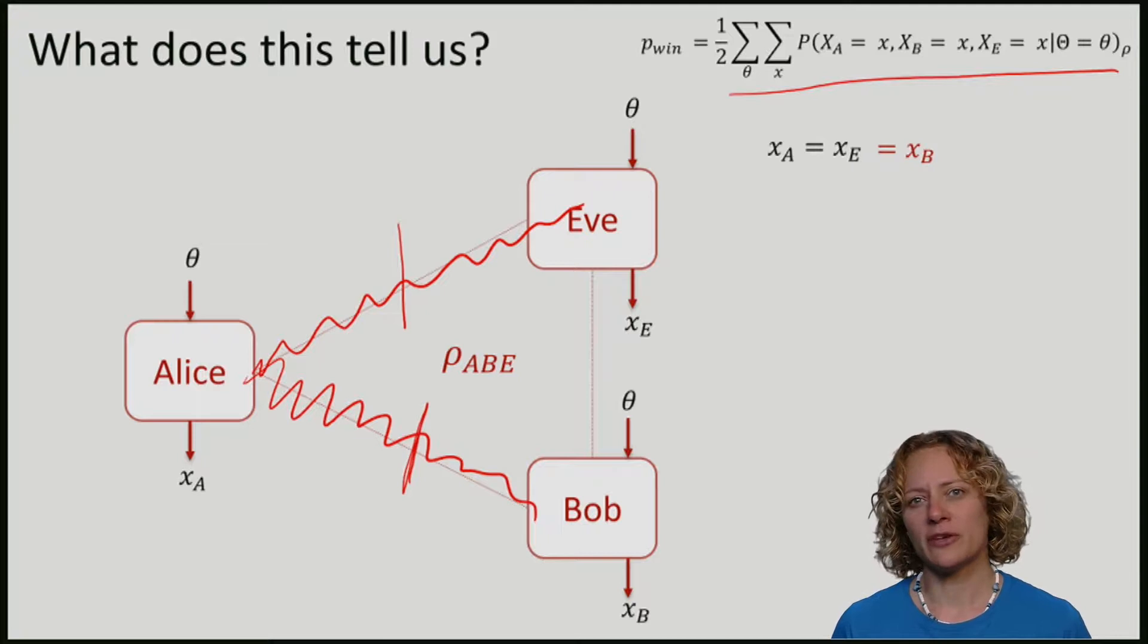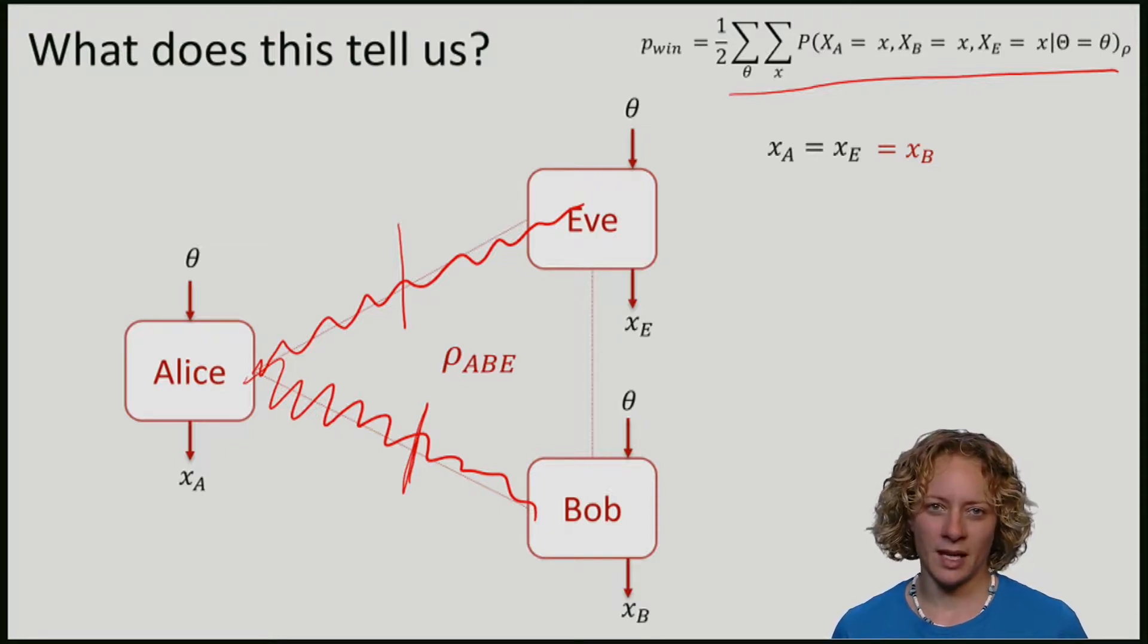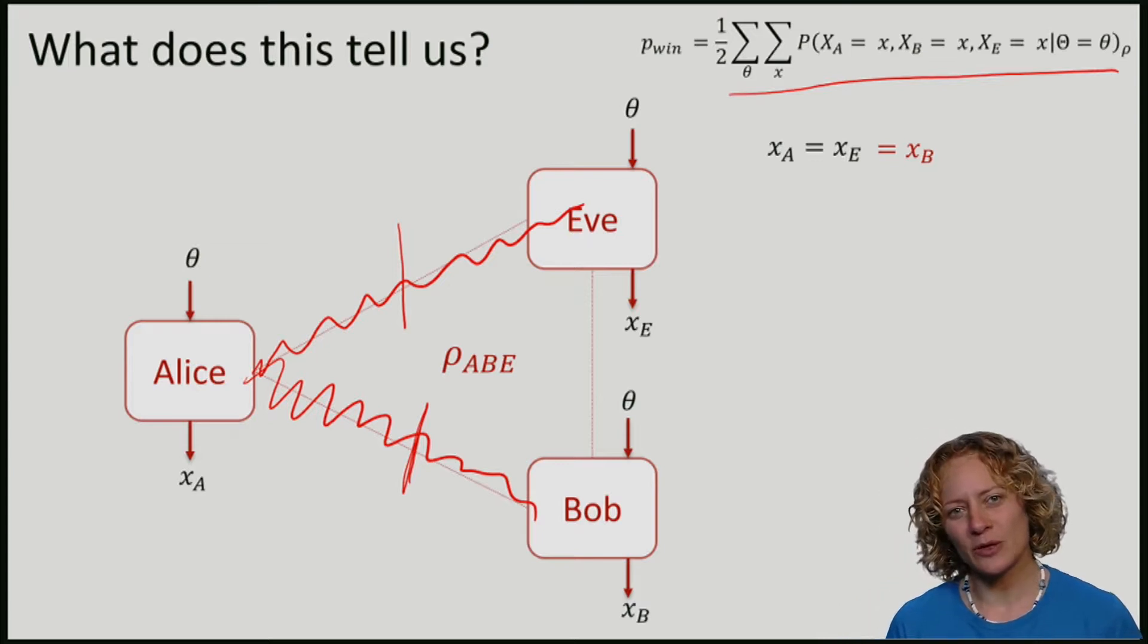How can we verify that Alice and Bob are very entangled? Of course, one way to do this is by means of a Bell test. And sometimes this will be very useful for us. Another way to exploit the monogamy of entanglement is precisely by this guessing game.